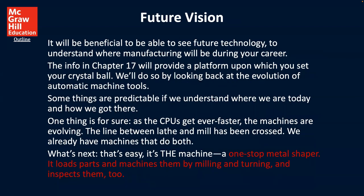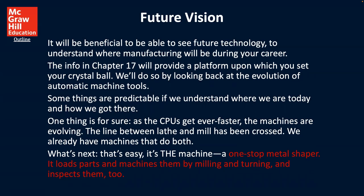For the future vision, it will be beneficial to understand where manufacturing will be during your career. The information in this chapter will provide a platform on which to set your crystal ball, looking forward while also looking back at the evolution of automatic machine tools. As central processing units get faster, the machines are evolving — the line between lathe and mill is becoming crossed, and we already have machines that can do both. What's next is the one-stop metal shaper: it loads parts and machines them by milling and turning and inspecting them too.